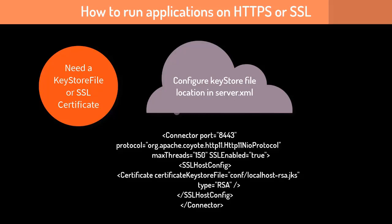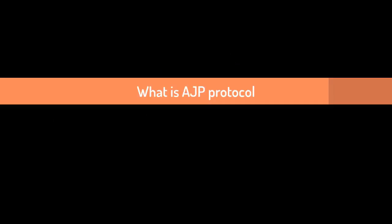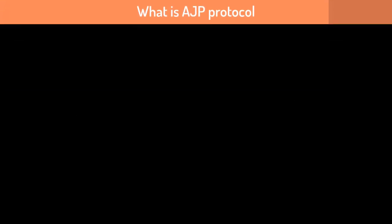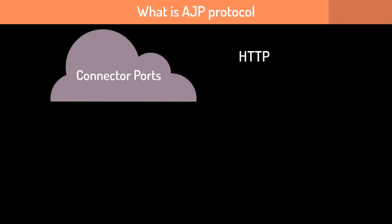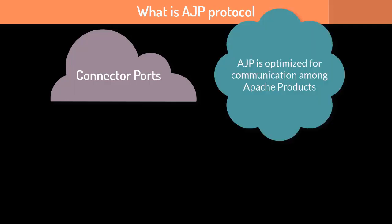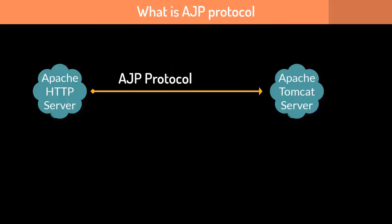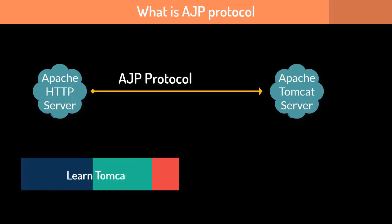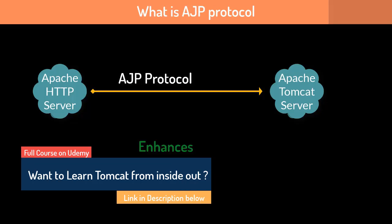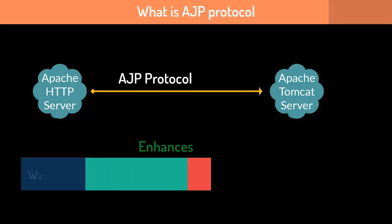What is AJP protocol and how is it different from HTTP? In Tomcat we have different connector ports — HTTP, AJP, HTTPS, etc. AJP is similar to HTTP but is intended for communication among Apache products. It is basically a binary form of HTTP. For example, when integrating Apache HTTP Server with Apache Tomcat, using AJP for communication enhances performance.